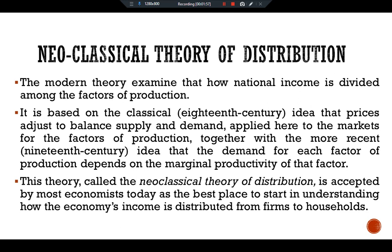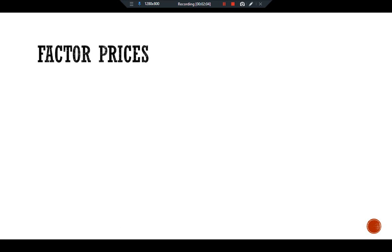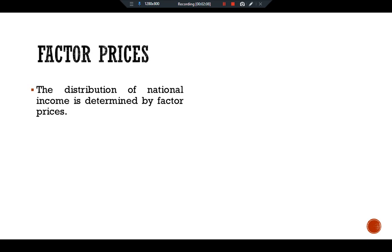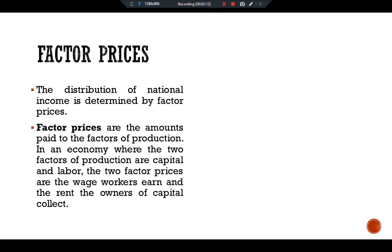The detailed explanation of new classical theory of distribution is given in a separate video. The distribution of national income is determined by factor prices. Factor prices are the amounts paid to the factors of production. In an economy where the two factors of production are capital and labor, the two factor prices are the wages workers earn and the rent the owners of capital collect.